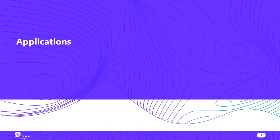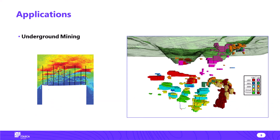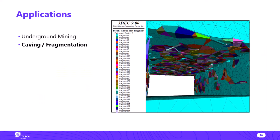The next few slides cover applications — things that people use 3DEC for. In underground mining you could do mine-scale problems, or smaller tunnel-scale problems. This example shows a fracturing material supported by rock bolts, where the colors show stress — you can see de-stressing close to the excavation with stresses shed higher up. Related to underground mining, people also use 3DEC for caving fragmentation, looking at fragment size statistics.